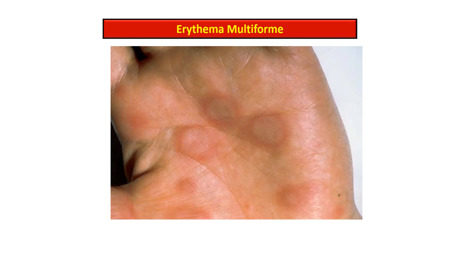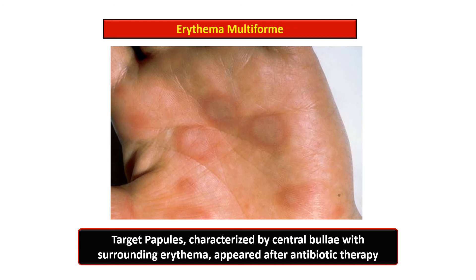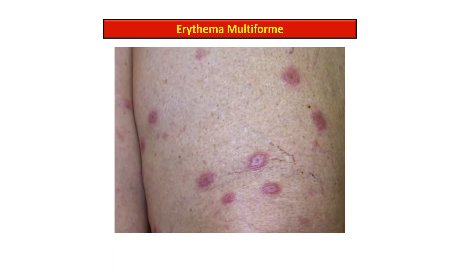This is the gross appearance of erythema multiforme, showing target papules with central bulla formation associated with surrounding erythema; this case appeared after antibiotic therapy. Another picture shows the multiform nature of the lesions, ranging from papules, vesicles, bullae, and sometimes hives. The classical target lesion has a central vesicle surrounded by a zone of erythema with a paler area outside.